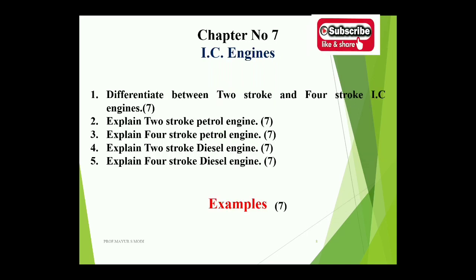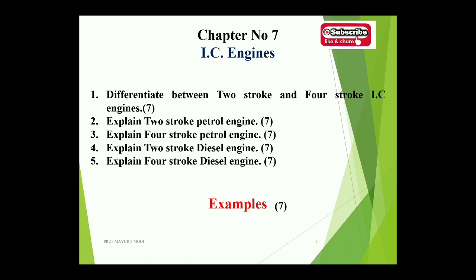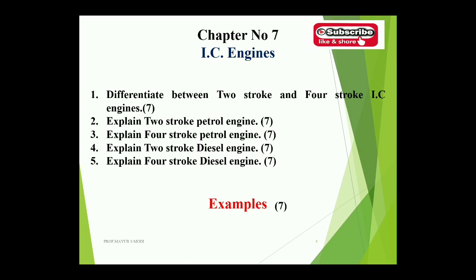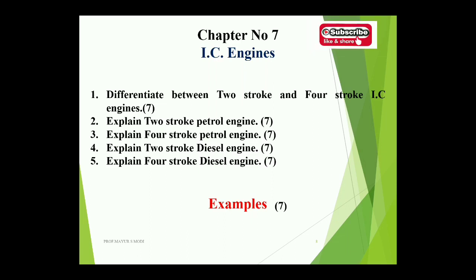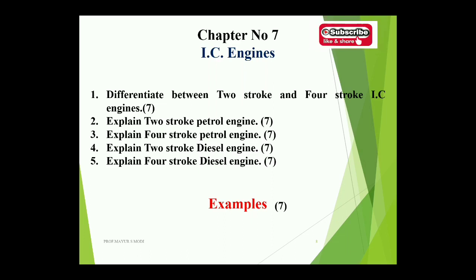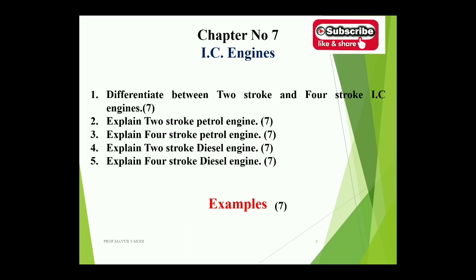Chapter seven covers IC engines, with five theories and one example. Topics: differentiate between two-stroke and four-stroke IC engines, 7 marks. Explain two-stroke petrol engine. Explain four-stroke petrol engine. Explain two-stroke diesel engine. Explain four-stroke diesel engine. One of these five theories has maximum chance in the examination, plus one example from IC engines.